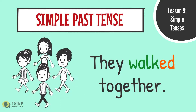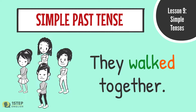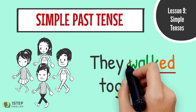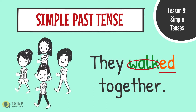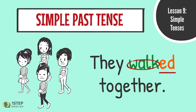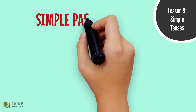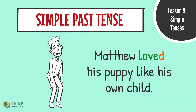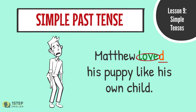'They walked together.' In this sentence, we add -ed to the word 'walk' to form the past tense 'walked.' 'Matthew loved his puppy like his own child.' In this sentence, we simply add -d to the word 'love' to form the simple past tense 'loved.'